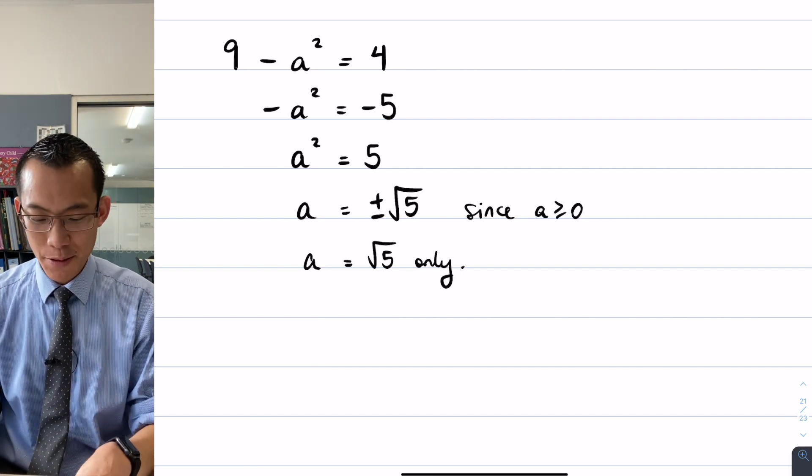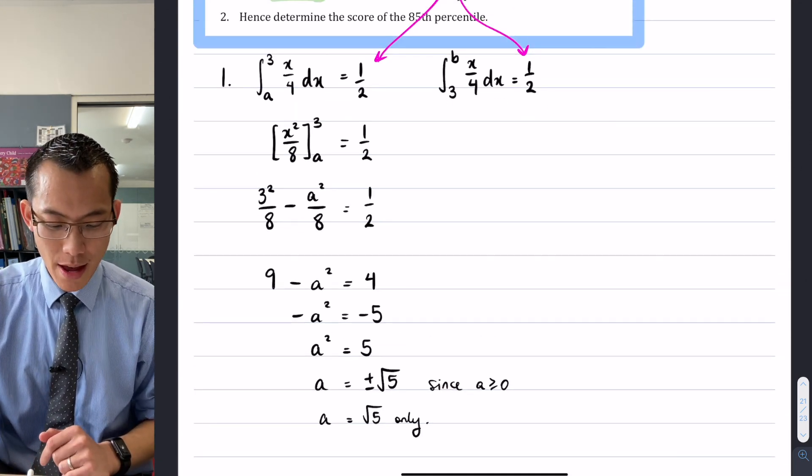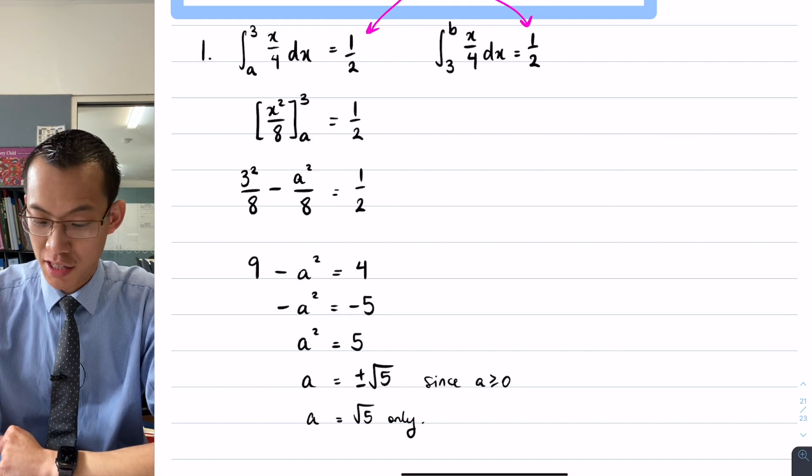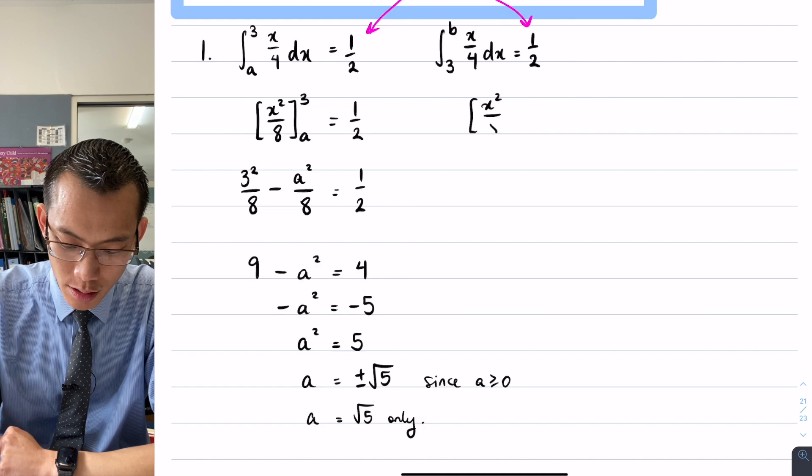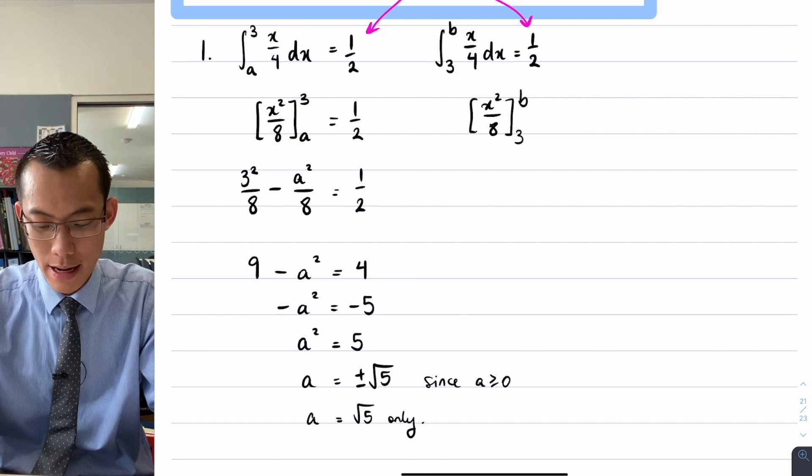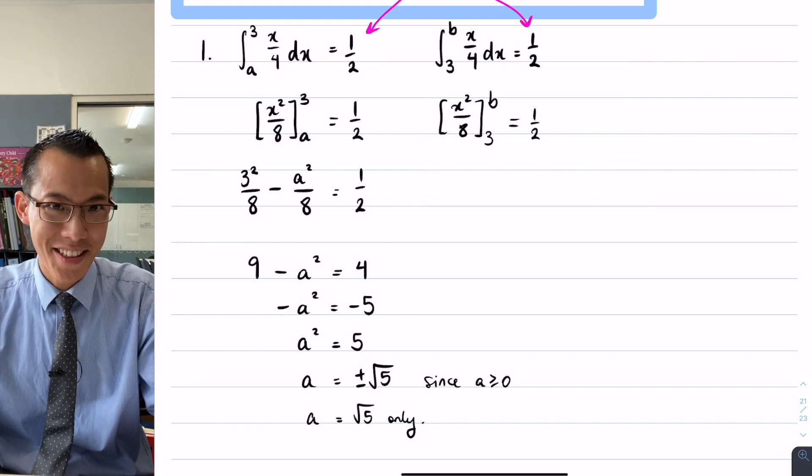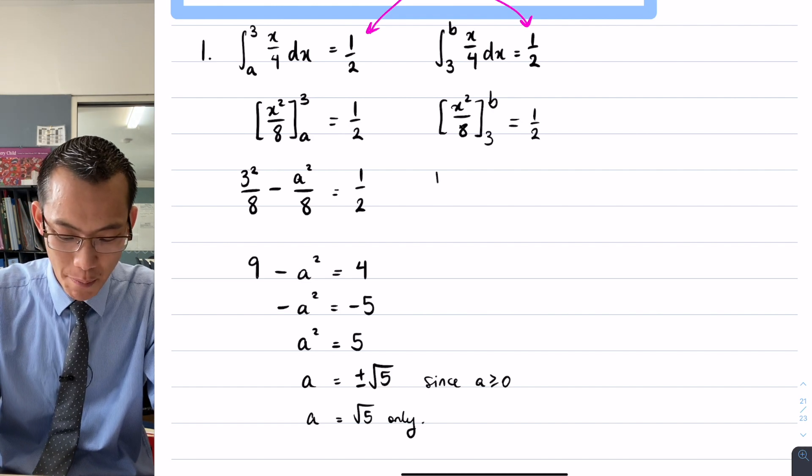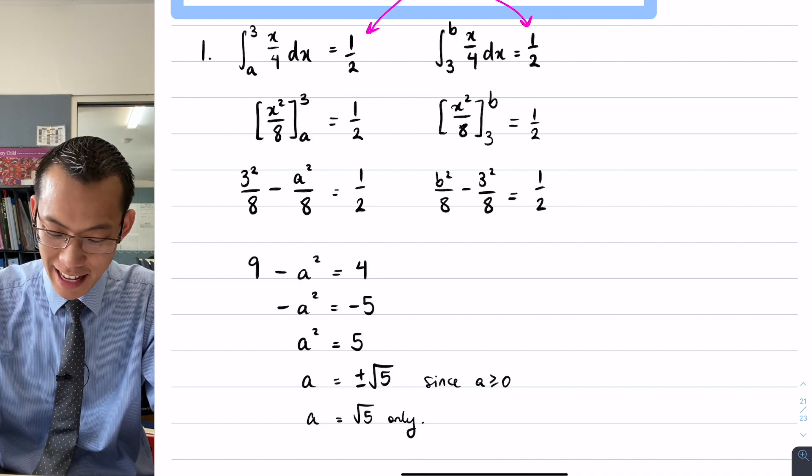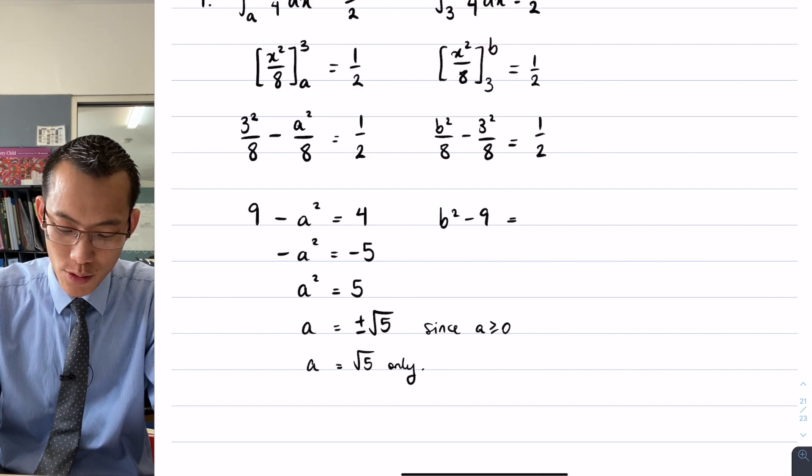What I'm going to try and do is go through this same process, but work it out for the upper boundary over here. And thankfully for us, a lot of the working is very, very similar. For example, I don't have to integrate a whole new function—it's still x on four. So I know that its primitive will still be x squared on eight. My boundaries are slightly different. It's not from a to three, it's from three to b, but they both equal to a half, just like I had in the other situation. You're going to get a very similar thing when you go ahead and evaluate your boundaries as well, because you've got b squared on eight, take away three squared on eight. Does that seem familiar? It should. And just like before, my instinct is to get rid of those fractions. So I'm going to multiply by eight, just like I did earlier. So I get b squared minus nine equals four.